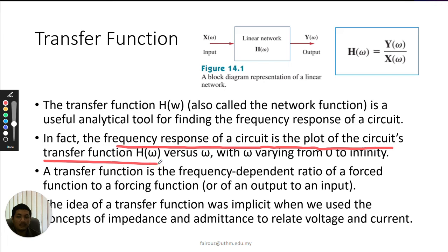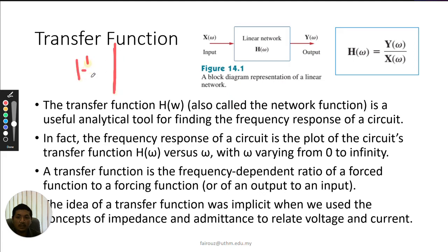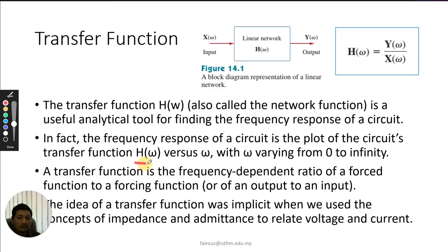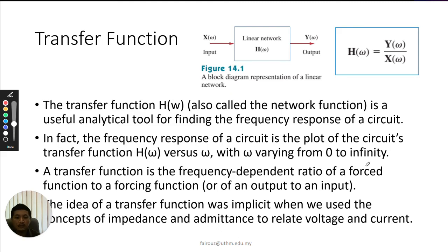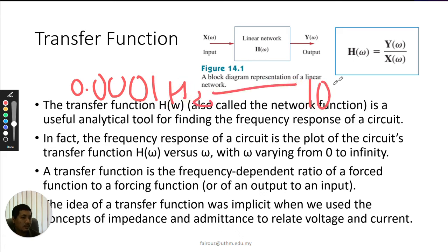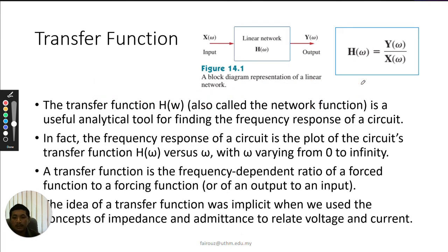The frequency response of a circuit is the plot of the circuit's transfer function. The y-axis is H(ω), the transfer function, and the x-axis is the frequency ω. The transfer function is H(ω) versus ω, with ω varying from zero to infinity — for example, from 0.001 Hz to one thousand megahertz.